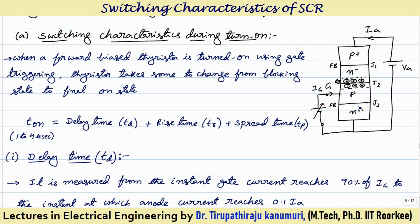In order to turn on the SCR, we have to apply the gate pulse. Whenever the gate pulse is applied, current will start passing from gate to cathode circuit. Because this N+ layer is heavily doped, some excess carriers will come to the P region, some will go through the gate circuit, and remaining electrons will jump over this junction as minority carriers — acting like a leakage current — and reach the N minus region. In the N minus region they will recombine with the positive charges, and because of this recombination the barrier width will decrease.